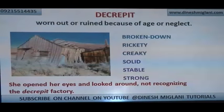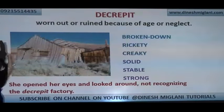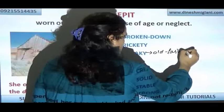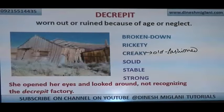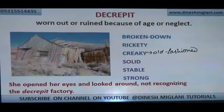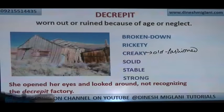Decrepit. The pronunciation is decrepit — something totally ruined because of neglect, or about to get destroyed because of neglect. You have things in your house you don't care for and they get destroyed — they become decrepit. Synonyms: broken down, rickety, and creaky — very old-fashioned and at the edge of breaking down. Antonyms: solid, stable, strong. Example: 'She opened her eyes and looked around, not recognizing the decrepit factory.'